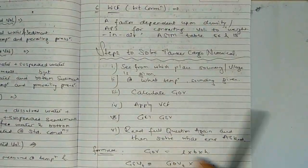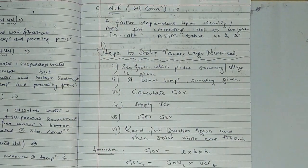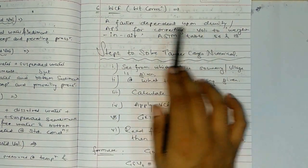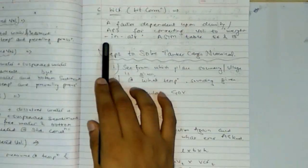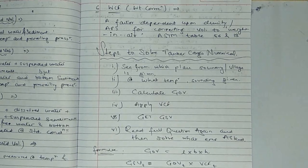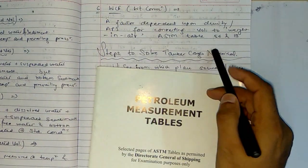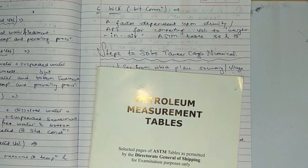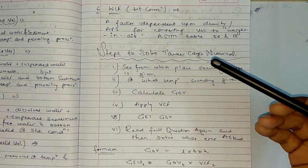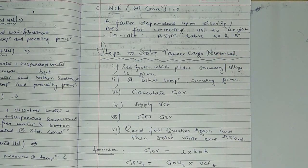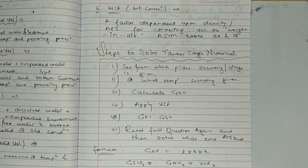Next is WCF — Weight Correction Factor — a factor dependent upon density and API for converting volume to weight in air, using ASTM table 56 and 13. If you have density in vacuum, then subtract 0.0011 so our weight comes to air. If density is in vacuum, we take it to air by this subtraction.